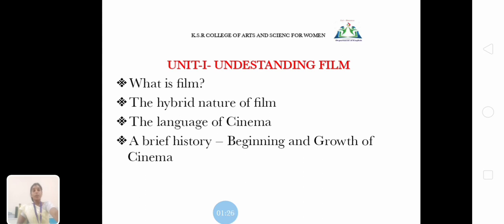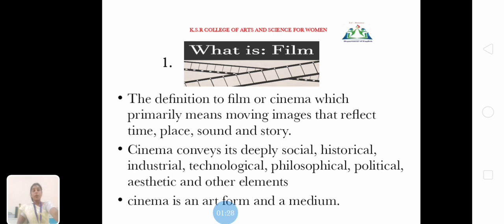I am going to explain about what is Film. The definition of film is cinema, which primarily means moving images that reflect time, place, sound and story. Cinema conveys its deeply social, historical, industrial, technological, philosophical, political, aesthetic and other elements. Cinema is an art form and a medium.